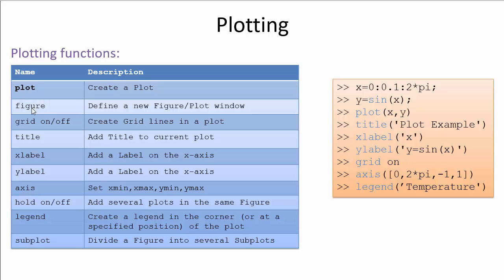We have the figure function that defines a new figure or plot window if we need to plot more than one figure. We can set the grid on and off, set the title, x-label, y-label, and the axis — setting x-min, x-max, y-min, y-max, etc. We have a legend we can use, and we can also create a subplot, meaning we can divide our figure into several subplots. All these functions we will use in some examples.